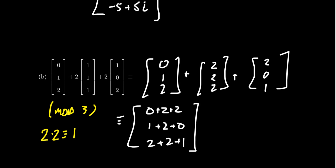If we just add these together as integers, we end up with 4, 3, and 5. But remember, as we're working mod 3, we want to reduce all of these things down.